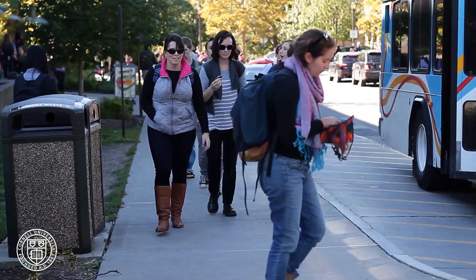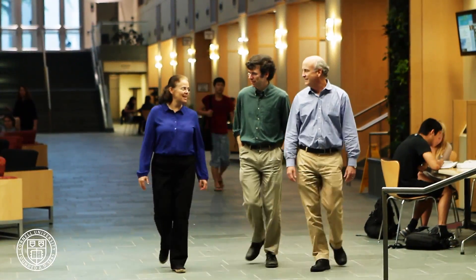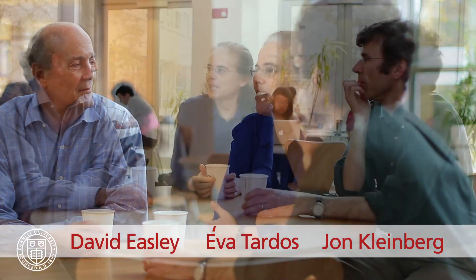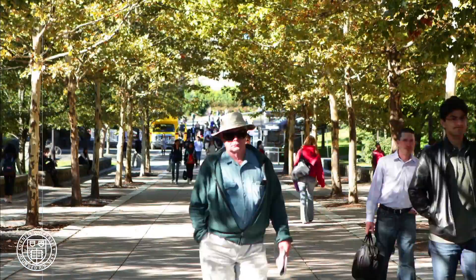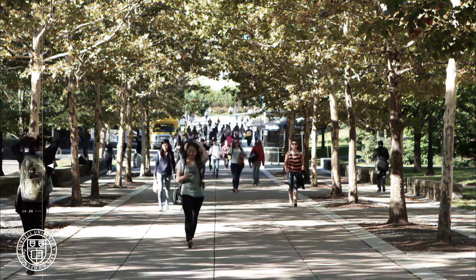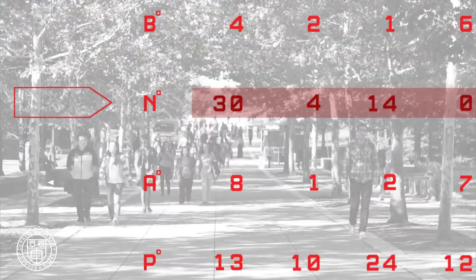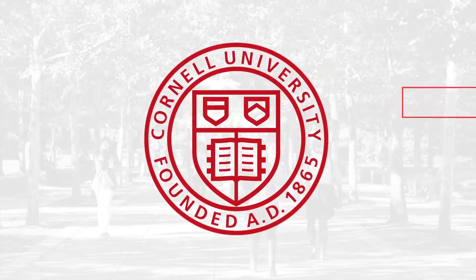It's essential information provided by three world-renowned researchers. Cornell professors David Easley, Eva Tardosch and John Kleinberg have teamed up and draw from their deep experience in economics, computer science and applied mathematics to teach the world about networks.